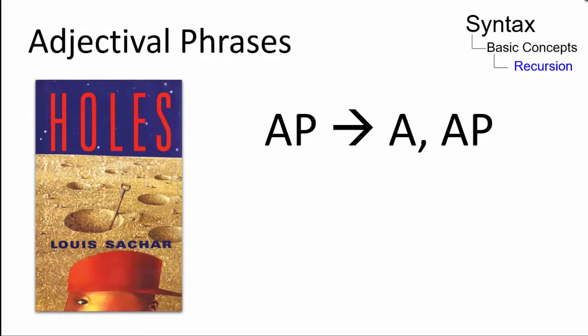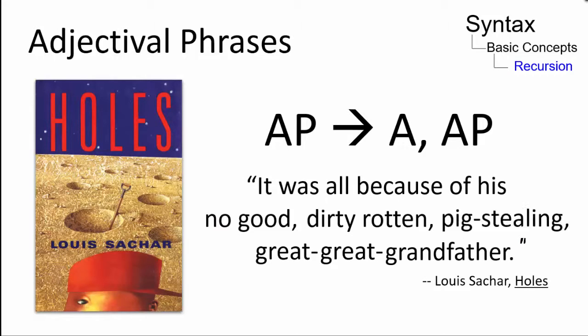According to the rule of generative grammar, an adjectival phrase may consist of an adjective and another adjectival phrase. That adjectival phrase can consist of an adjective and yet another adjectival phrase. The rule can be applied over and over to create grammatically boundless possibilities.